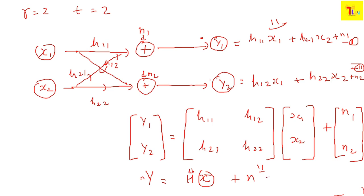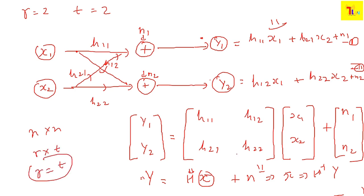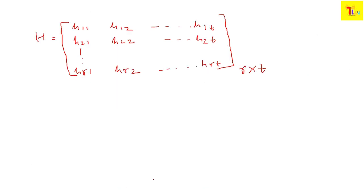Ignoring noise just for now — how can we get x = H⁻¹·y? We can take H inverse only if the matrix is square (n×n). If R equals T we can multiply directly by H inverse. But in general the matrix may not be square — R and T may differ — so we need another technique.